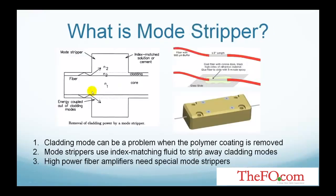When working with rather short pieces of fiber, for example in order to measure some strong absorption in highly-doped, rare-earth-doped fiber, incomplete elimination of power in cladding modes may be a problem. This is particularly the case when the polymer coating around the fiber has to be removed.